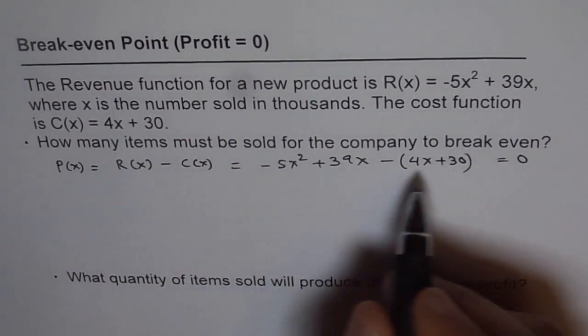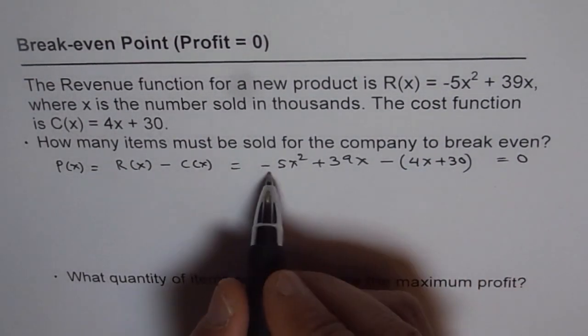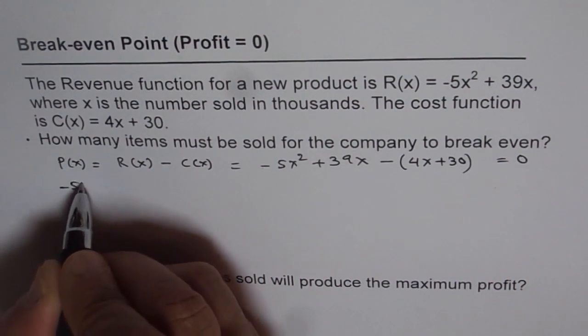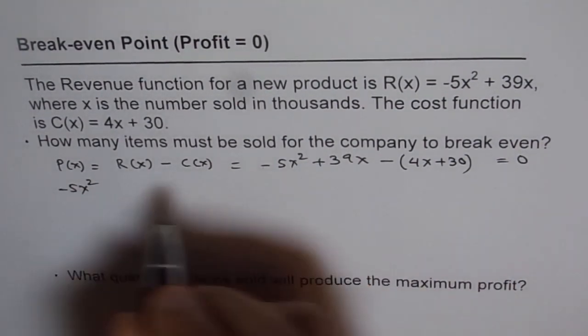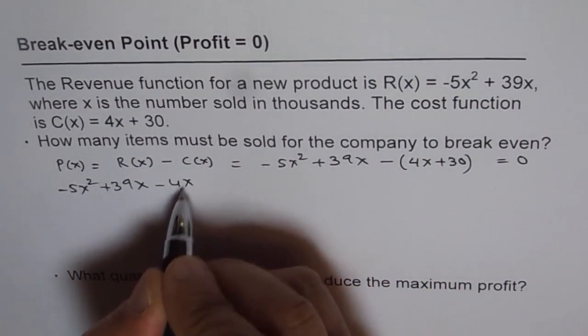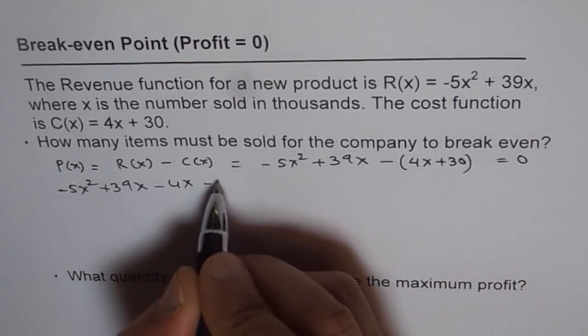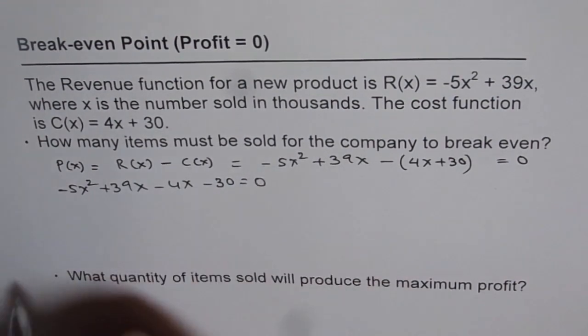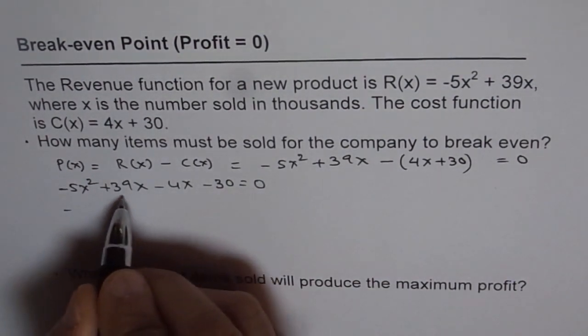So what we need to do is just simplify this and get the answer. So we have minus 5x² plus 39x minus 4x minus 30 equals 0. Now, we can combine these terms.